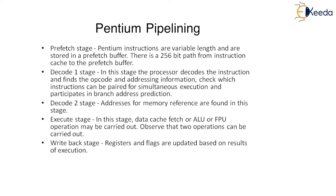Understand the difference between data pipeline and instruction pipeline. Pipelining is a technique of decomposing a sequential task into several sub-tasks, where each sub-task is going to get executed in its own dedicated segment. It's all about segmentization. For example, instead of a single ALU capable of performing one operation at a time — arithmetic, logical, or shift tasks — what if we can segmentize it?